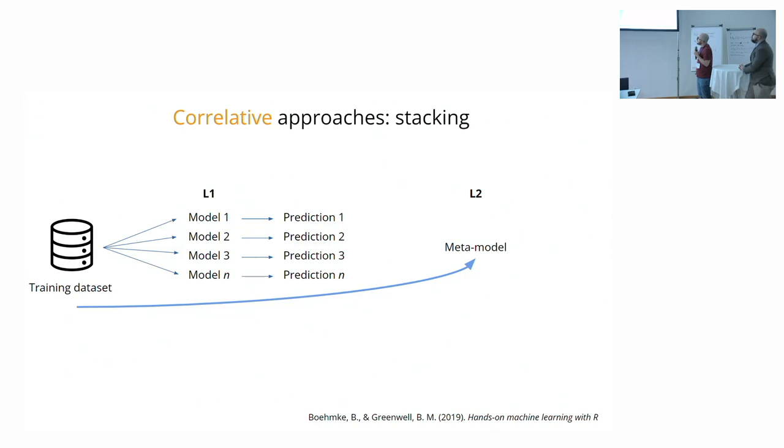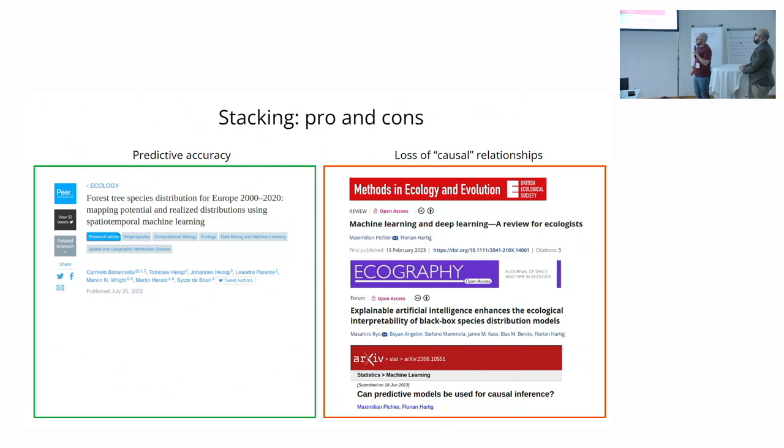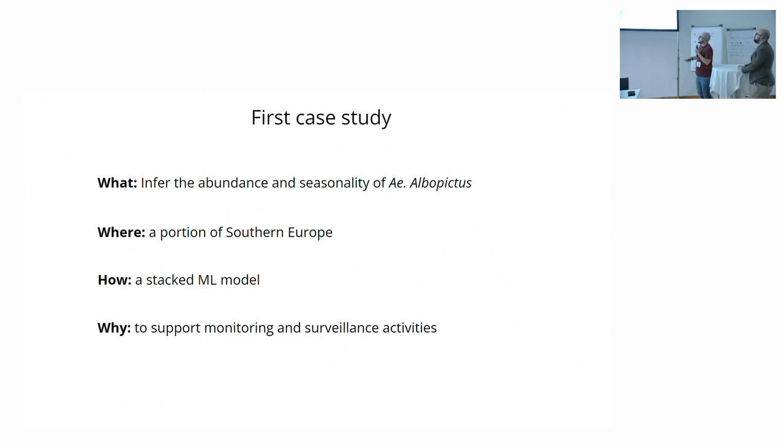But there are better methods. One of these is called stacked machine learning where L1 means base learner or learner level one. We train different models, we get different predictions. Then we take the same response variable and we put it into a meta model, a second level learner, and we use the prediction of the base learner to inform the meta models. This has been shown to work pretty well. Carmelo did a paper about it a couple of years ago. While it increases predictive accuracy, on the other hand, we lose completely the causal aspect because we are using the prediction of other algorithms to inform a second model. There are some explainable AI methods that can improve this lack of interpretability, but it's not the focus of today. In the first case study, we try to infer the abundance and seasonality of the albopictus in a portion of southern Europe using this stacked machine learning model to support monitoring and surveillance activities.